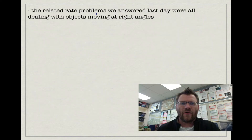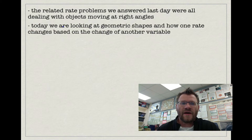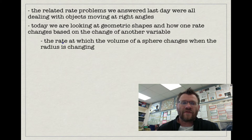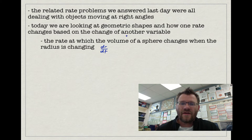The related rate problems we answered last day were all dealing with objects moving at right angles to each other. Today we're looking at geometric shapes and how one rate changes based on the change of another variable. For example, the rate at which the volume of a sphere changes when the radius is changing — dr over dt is the change in radius over change in time, and dv over dt is the change in volume over change in time — and how those two things are related.